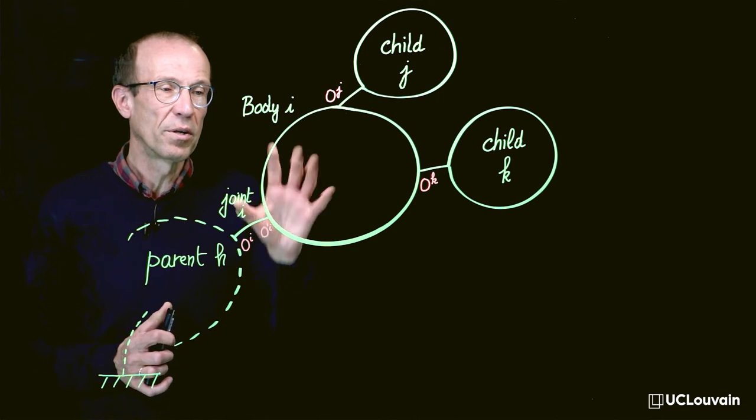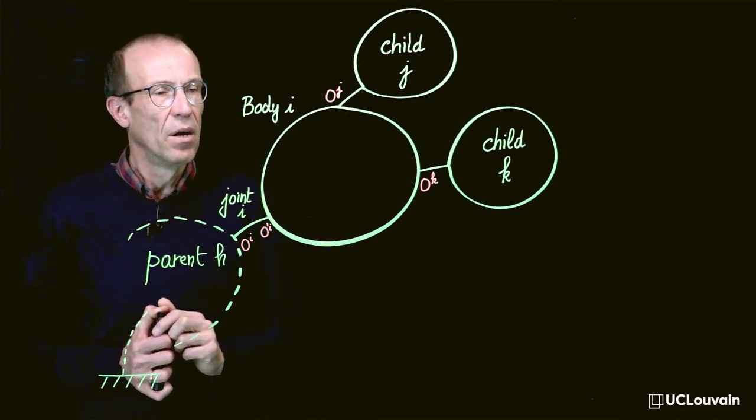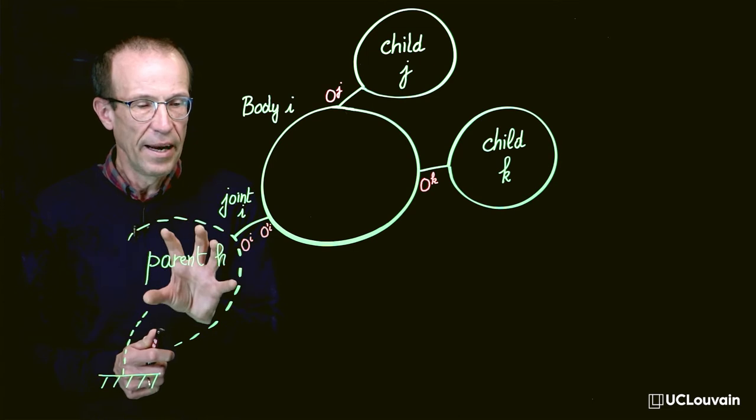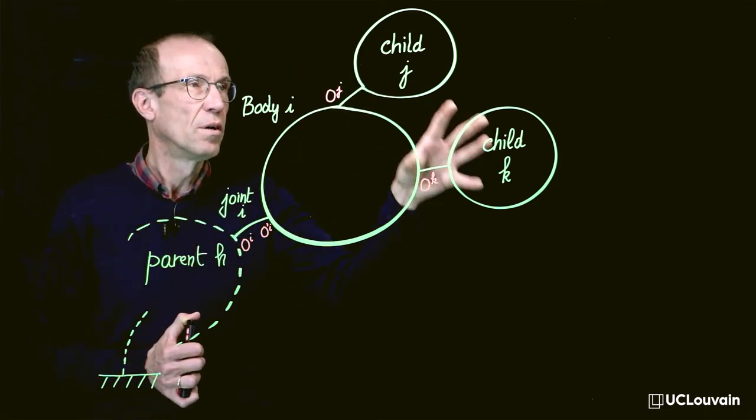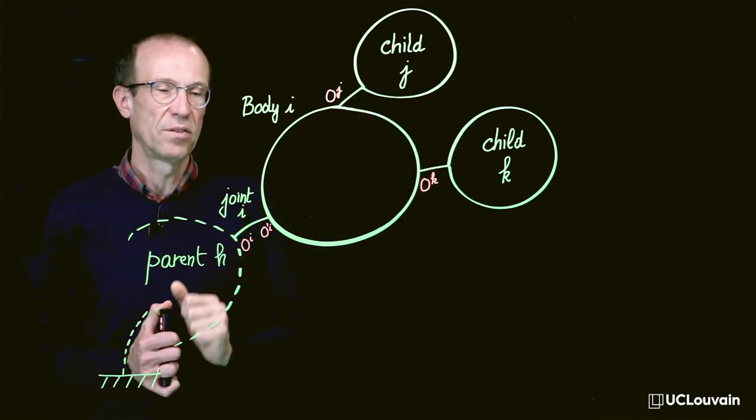Let us come back to body I, in this example, connected to its parent H via a joint and connected to two children, J and K in this case.